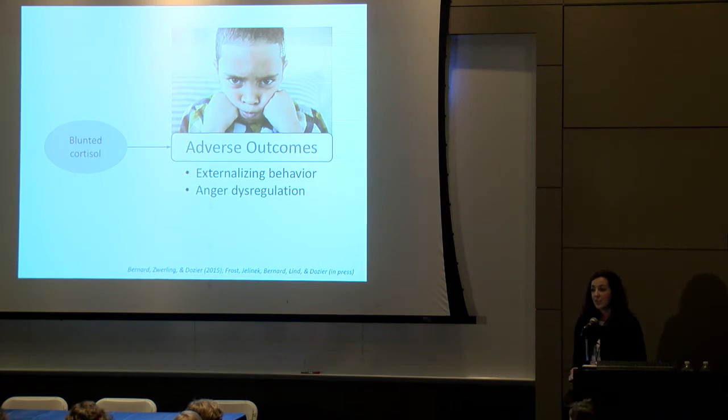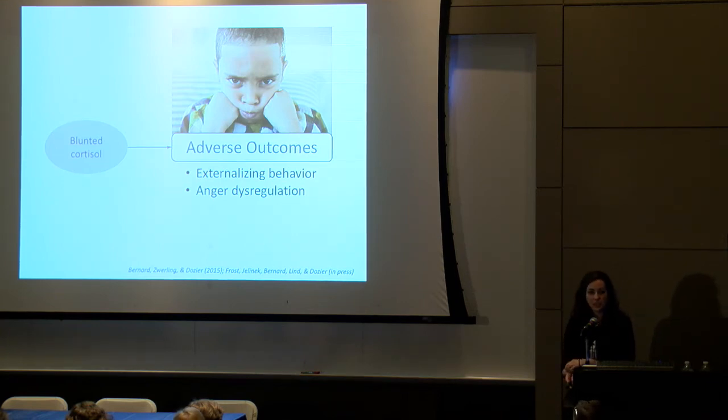This pathway suggests a target potentially for intervention. If we can normalize cortisol, we might see some changes in these outcomes that are really important for development, school success, peer relationships, and so on.